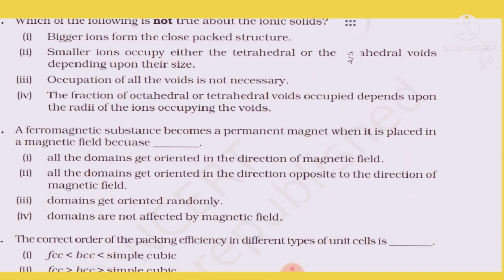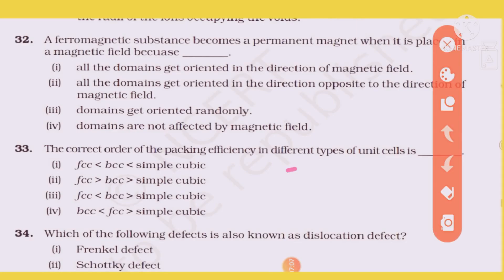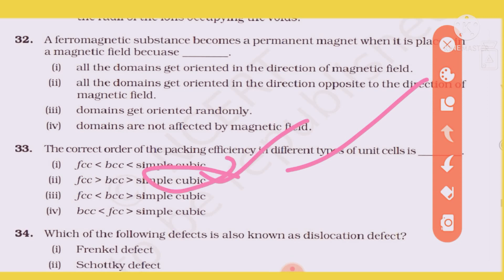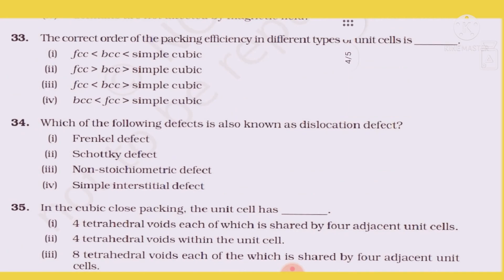Next important question: Order of packing fraction for FCC, BCC, and Simple Cubic. The correct order is Simple Cubic less than BCC less than FCC. The second option is correct.